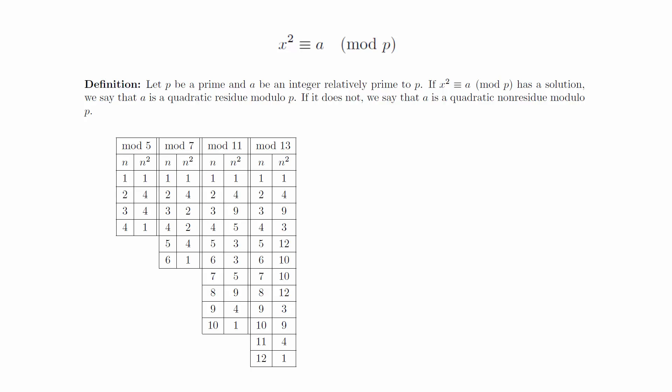From here we can determine whether x squared congruent to a modulo p has a solution by just checking the chart. For example, we can see that x squared congruent to 2 modulo 7 has two solutions, but that x squared congruent to 3 modulo 5 does not have any. In other words, 2 is a quadratic residue modulo 7 and 3 is a quadratic non-residue modulo 5.